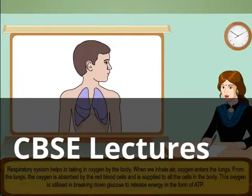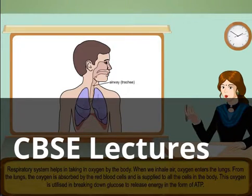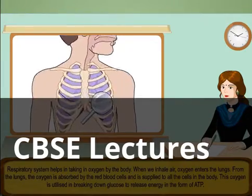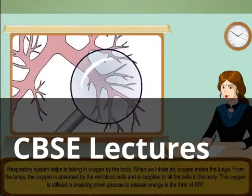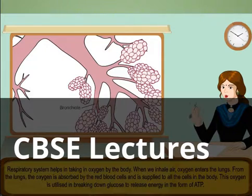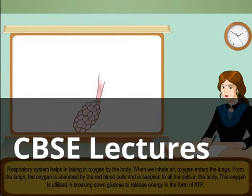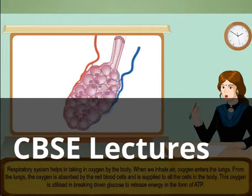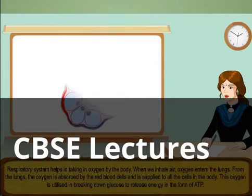The respiratory system helps in taking in oxygen by the body. When we inhale air, oxygen enters the lungs. From the lungs, the oxygen is absorbed by the red blood cells and is supplied to all the cells in the body. This oxygen is utilized in breaking down glucose to release energy in the form of ATP.